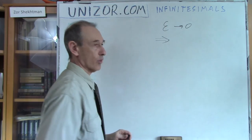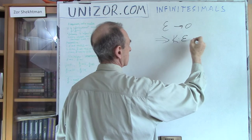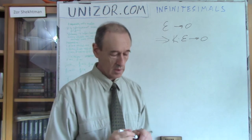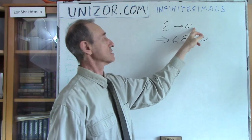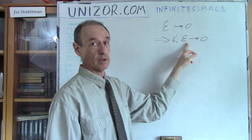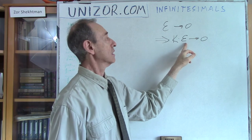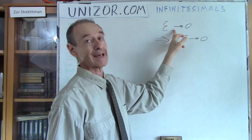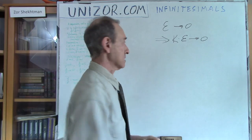Therefore — this is the sign for 'therefore' — if k is some kind of constant, then k times epsilon is also infinitesimal. It doesn't matter what kind of constant it is: if the limit of epsilon is equal to zero, the limit of k times epsilon equals k times the limit of epsilon, and since the limit of epsilon is zero, I get zero as a result. So if epsilon is infinitesimal, k times epsilon, where k is a constant, is also infinitesimal.